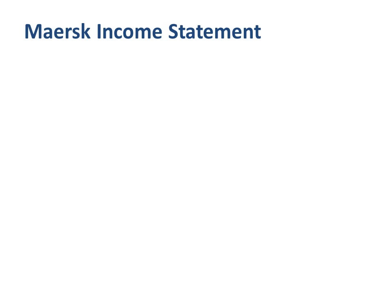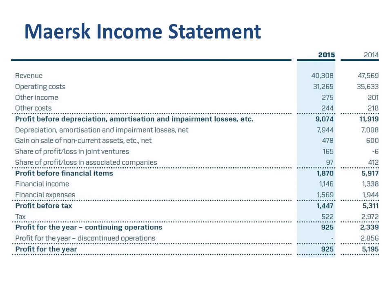Let's look at an example of using EBIT and EBITDA in financial reporting. I took the 2015 annual report of the Maersk Group, a company headquartered in Denmark and operating globally. They report in US dollars. Their best known business is Maersk Line, which is the world's largest container shipping company. They are also active in areas like oil and gas, terminals, and drilling.